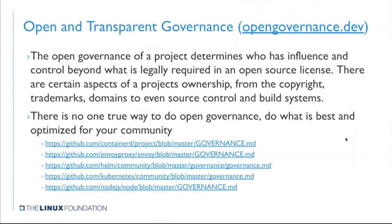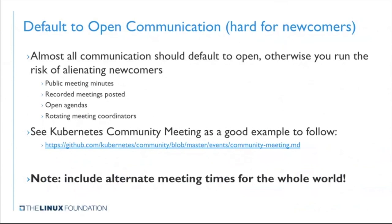Having an open governance structure is super important — it's about defining how you perform project actions within your community. These include things like how you have elections, how a project is governed, who owns the trademarks and domains, and how build systems are managed. Having open, transparent governance generally builds trust in your community and really helps with growth and adoption of projects. There's really no one way to do this, but if you go to opengovernanance.dev you can look at some basic checklists and examples. I truly wish GitHub and GitLab would one day adopt some kind of standard around governance files, similar to how license files are standard.